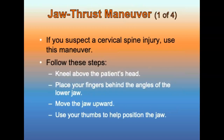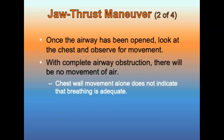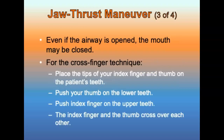The second method is the jaw thrust maneuver. If you suspect a cervical spine injury, use the jaw thrust maneuver: kneel above the patient's head, place your fingers behind the angles of the lower jaw, and move the jaw upward using your thumbs to help position the lower jaw. Once the airway has been opened, assess whether breathing has returned by looking at the chest for obvious movement. With complete airway obstruction there will be no movement. Even though you may have opened the airway, the patient's mouth may be closed.